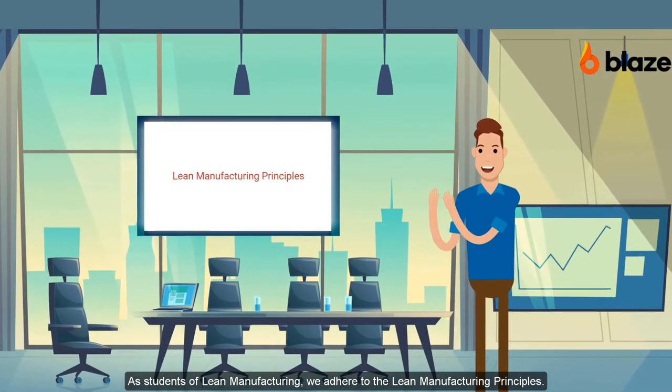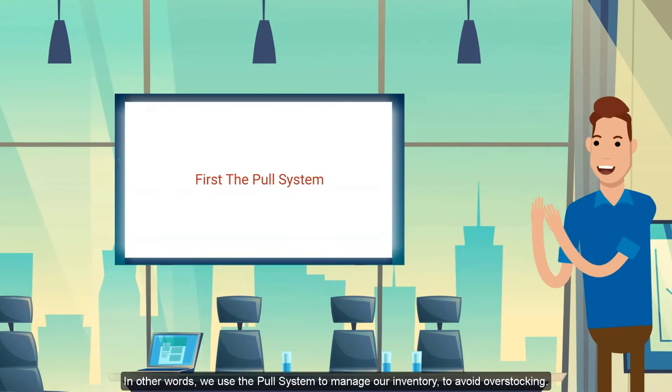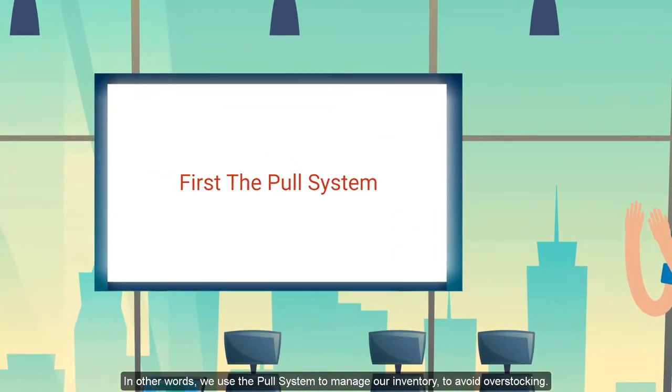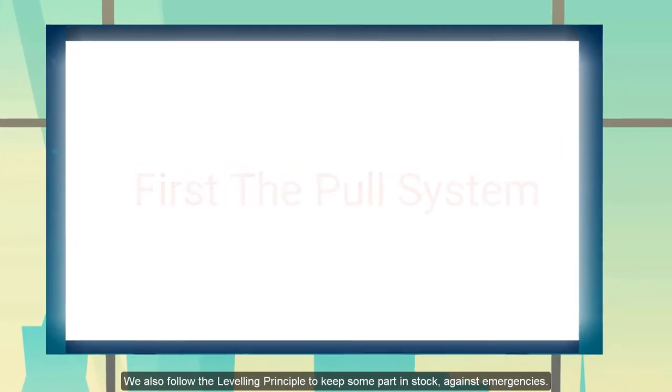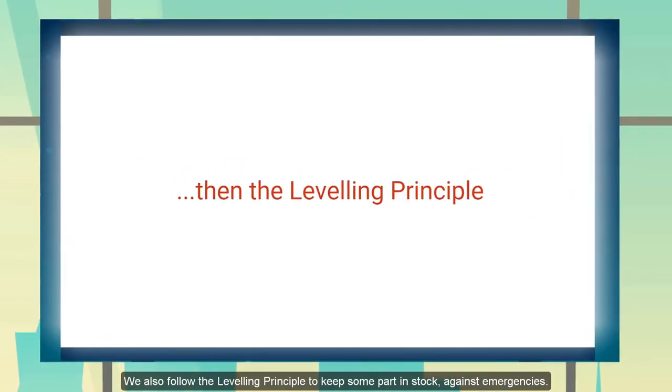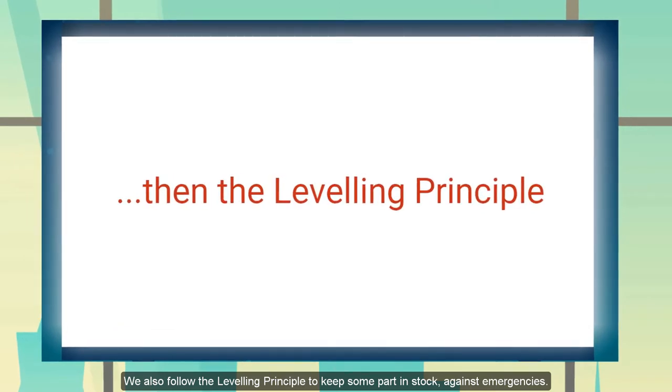Students of Lean Manufacturing will follow the Lean Manufacturing principles. What this means is that to avoid inventory overstocking, we use what is called the pull system to avoid excess inventory and overproduction. But on the other hand, we also use what is called the leveling system to keep some materials in stock just in case of emergency.